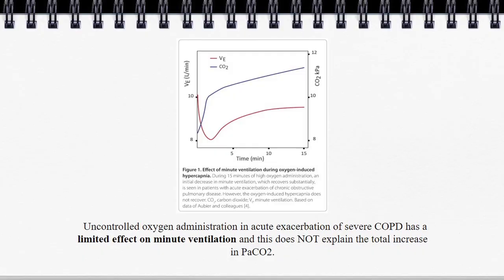These are the myth busters, but maybe this is presumptive — so let's keep talking. This graph from a more recent review article in CHEST compiled Obier's data. The red line is minute ventilation and the blue line is arterial CO2, showing how they change over time after oxygen administration. Initially minute ventilation does drop a little, but then it increases again and reaches a steady state, whereas CO2 continues to increase almost indefinitely. So uncontrolled oxygen administration in acute exacerbation of severe COPD has a limited effect on minute ventilation, and this doesn't explain the total CO2 increase.